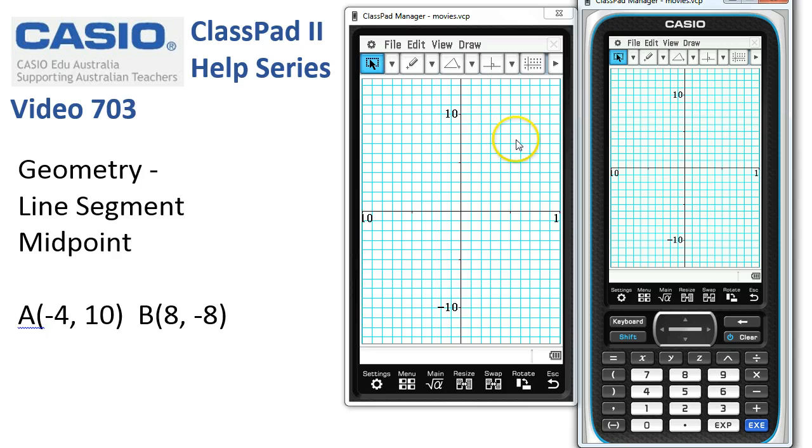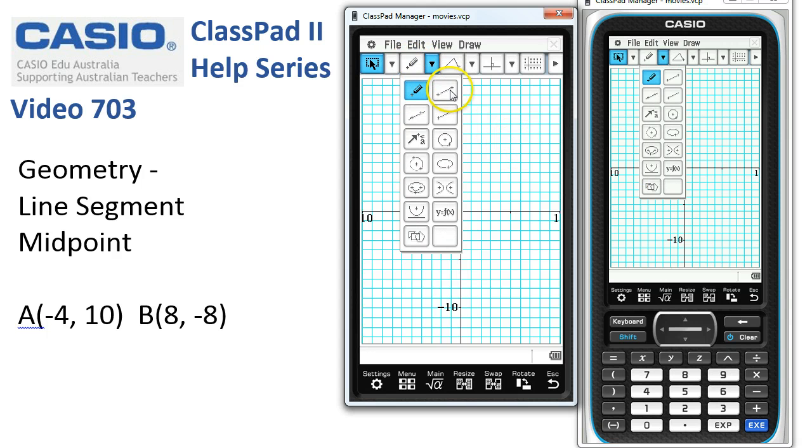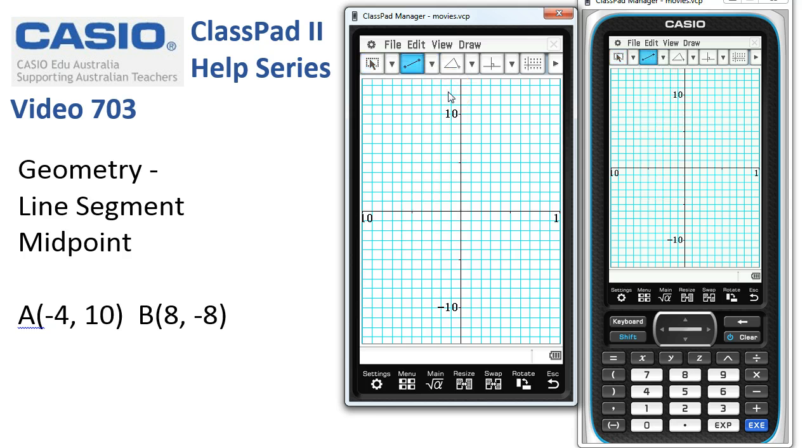Anyway, we're ready to go here. So we need the line segment tool. Here it is, underneath this set of tools. The top right one is the line segment. And I want to place A at negative 4, 10. So negative 4, 10 is around about here. I tap there, close enough to the grid lines. Classpad will lock it exactly to that point because I've got the snap to grid on.